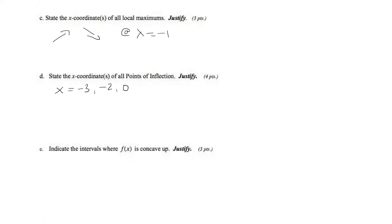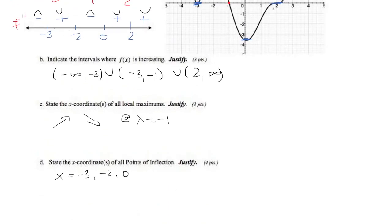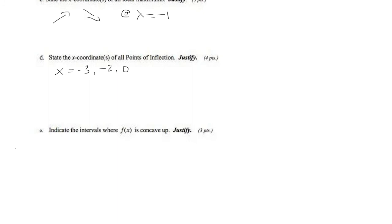Now we have to look at where it's concave up. So it's going to be concave up between negative 3, negative 2, 0 to 2, and 2 to infinity. Again, we don't include the endpoints. And that's because the second derivative is positive.